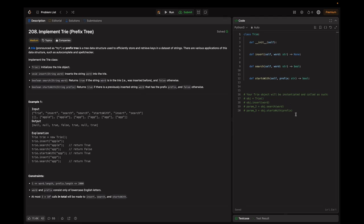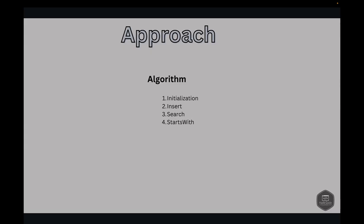Let's look into the algorithm. First, initialization: define a TrieNode class to represent each node in the trie. Each TrieNode will have a dictionary to store child nodes and a boolean to indicate if it is the end of a word. Next, insert: starting from the root node, for each character in the word, check if it exists as a child node. If not, create a new TrieNode. Move to the child node and continue until all characters are processed, then mark the end of the word with a boolean.